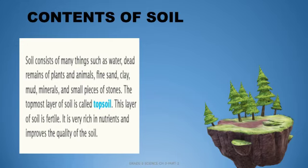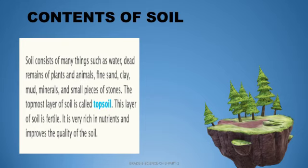The topmost layer of the soil is called topsoil. The soil is divided into different layers. The topmost layer, which we can see whenever we visit a garden — we have seen grasses — that topmost layer is known as the topsoil. This layer of soil is fertile, meaning it consists of nutrients that help plants to grow.